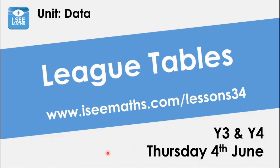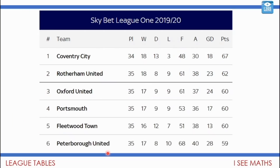Today is all about league tables and understanding how league tables are put together. League tables are often used to show how well teams are doing in different sports. I had to delve into my favourite sport, football. One of my friends is a Coventry City supporter, so I'm going to bring up the league table for League One at the moment. This is how league tables are put together — for all the matches teams have played, we need a way of registering who's being most successful.